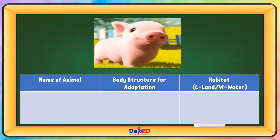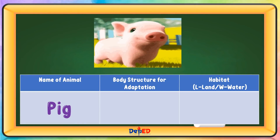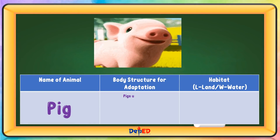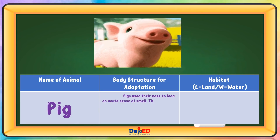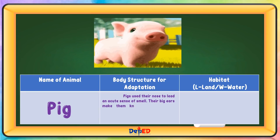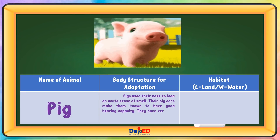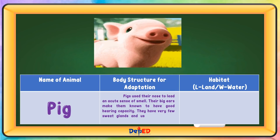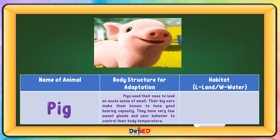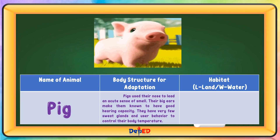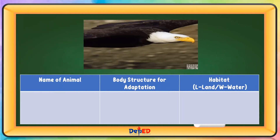Name of animal: Pig. Body structure for adaptation: Pigs use their nose to have an accurate sense of smell. Their big ears make them known to have good hearing capacity. They have very few sweat glands and use their behavior to control their body temperature. Habitat: Land.